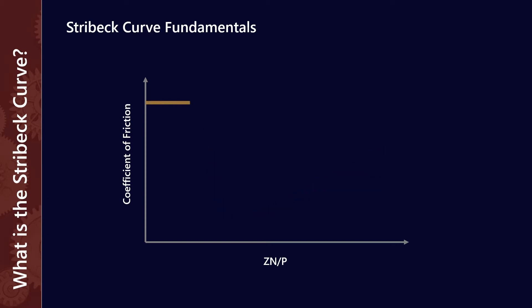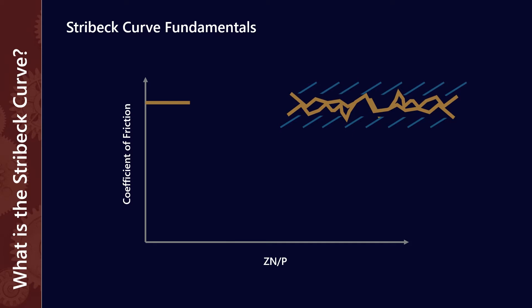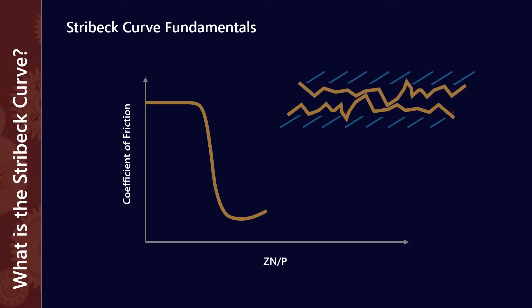The first section is what we call boundary lubrication. If you think of two imperfect surfaces — maybe of a bearing — what happens here is that there isn't sufficient lubricant film, or maybe there's no lubricant at all, and so the metal surfaces are in contact with each other. The friction is determined by the surface finish and the material. As you start to support a little more load with the lubricant, it goes into the mixed condition, where some load is supported by the lubricant film but we still have interaction of the solid surfaces.